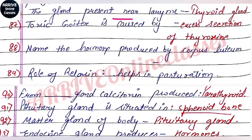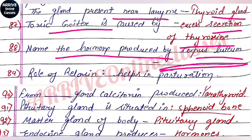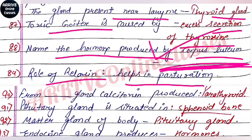The glands present in your larynx region are the thyroid gland and parathyroid gland. Goiter is caused by excess or deficiency of thyroxine hormone. The hormone produced by corpus luteum is relaxin, which helps in parturition. Calcitonin is produced by the thyroid gland, while the parathyroid gland maintains blood calcium levels.